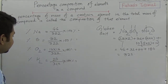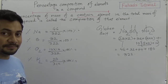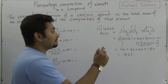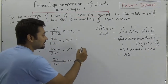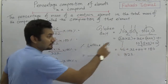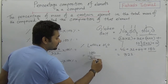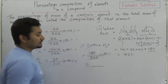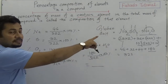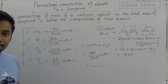If the question asks for the percentage composition of lattice water specifically, then the answer is: percentage of lattice water = 180/322 × 100%. But if the question asks for the percentage composition of different elements, then you calculate sodium, sulfur, oxygen, and hydrogen separately as shown.